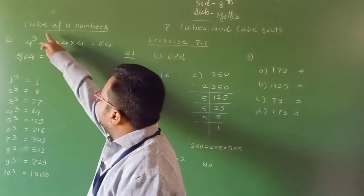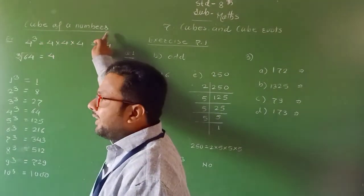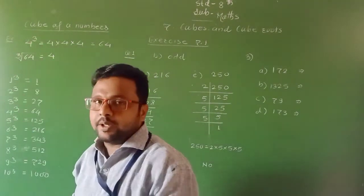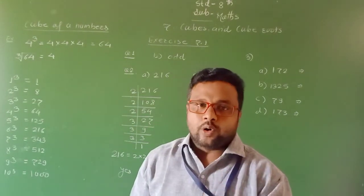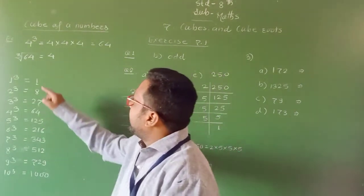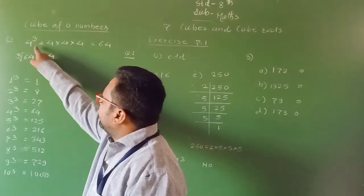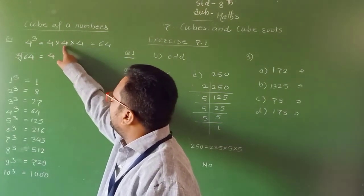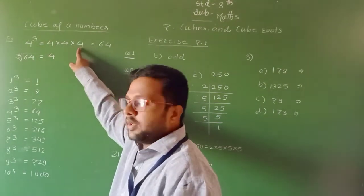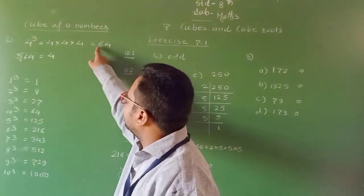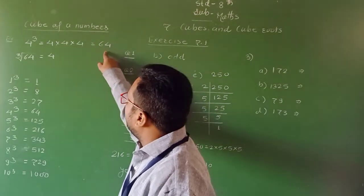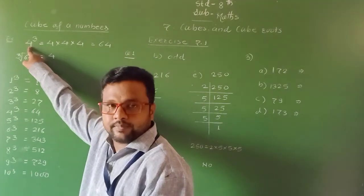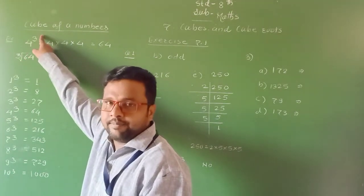Now, cubes of a number. Here I take the example 4 raised to the power 3. This represents the cube of 4. What is the cube of 4? We multiply 4 three times, that is 4 into 4 into 4. Their multiplication is 64. So 64 represents the cube of 4, that is 4 raised to the power 3.